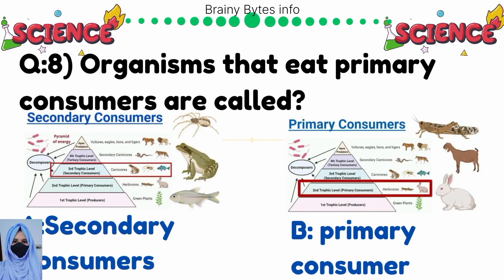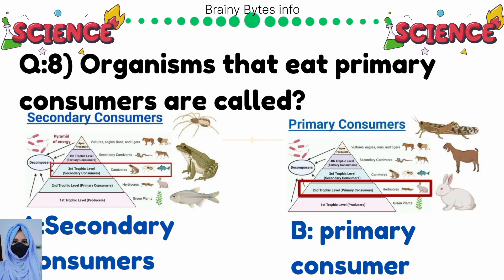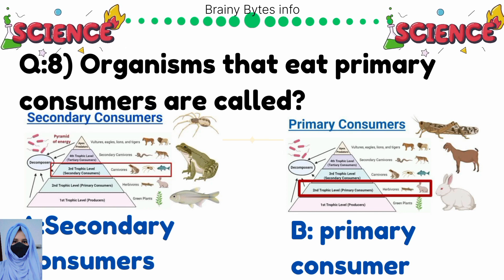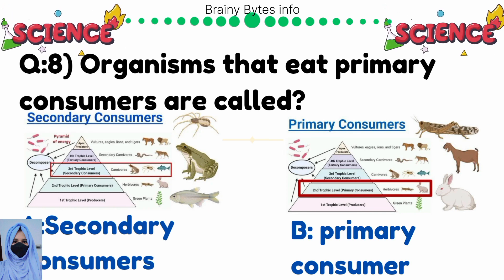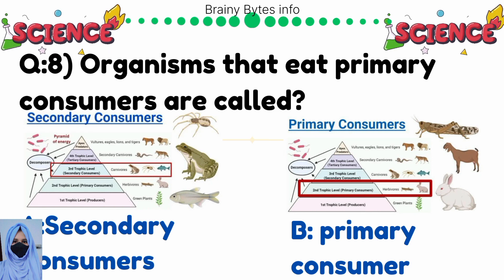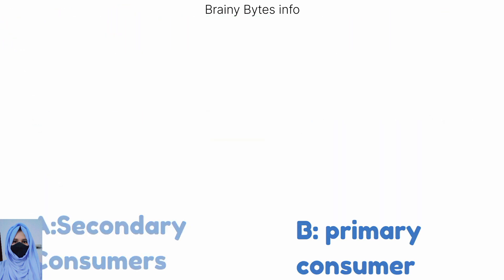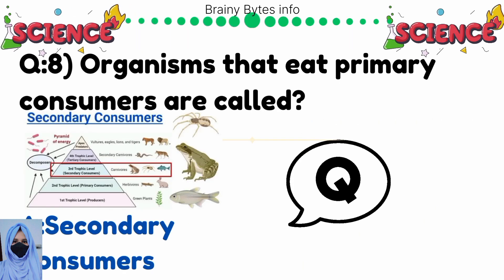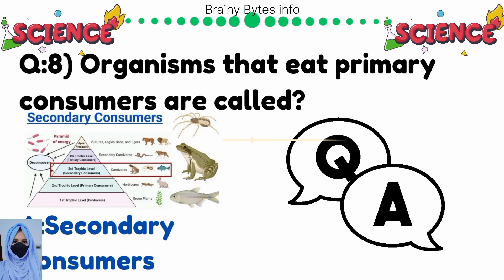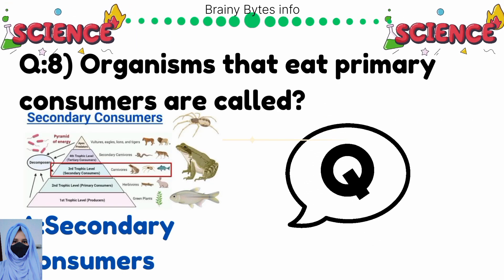Organisms that eat primary consumers are called — option A: secondary consumers, option B: primary consumers. Correct answer is secondary consumers.